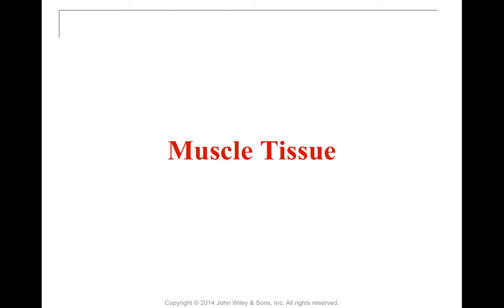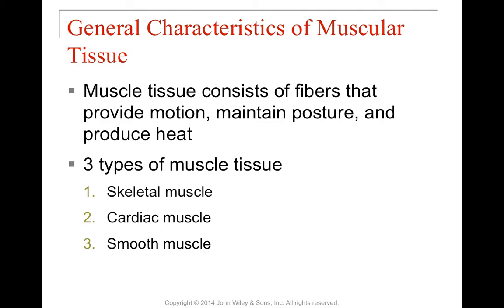Moving on from connective tissue, let's talk about muscle tissue. Muscle tissue is specialized because it provides motion. In the body, skeletal muscle helps maintain posture by moving your bones and also produces heat because it uses a lot of ATP. The three major types of muscle tissue are skeletal muscle, cardiac muscle — which is directly related to the heart and is a very specialized type — and smooth muscle, like uterine muscle or the muscle in the bladder. Each of those will get its own lecture.